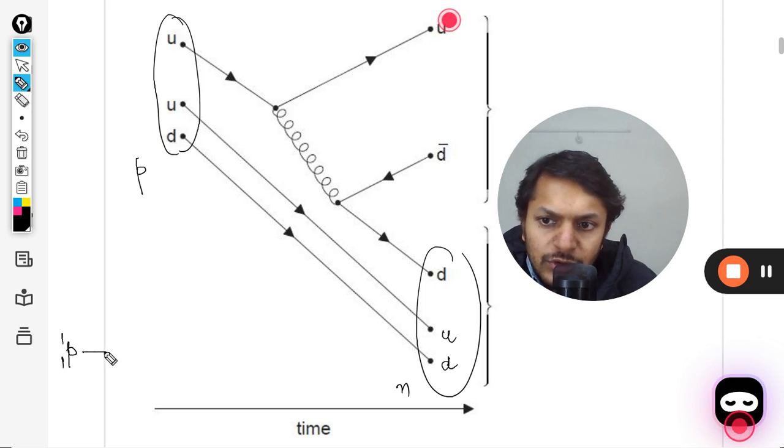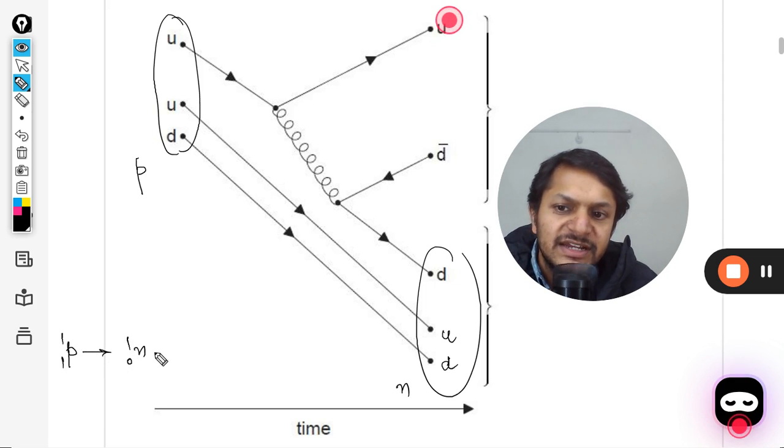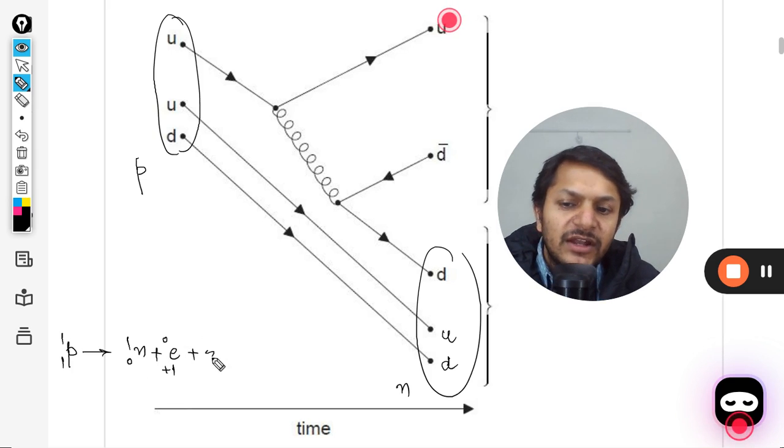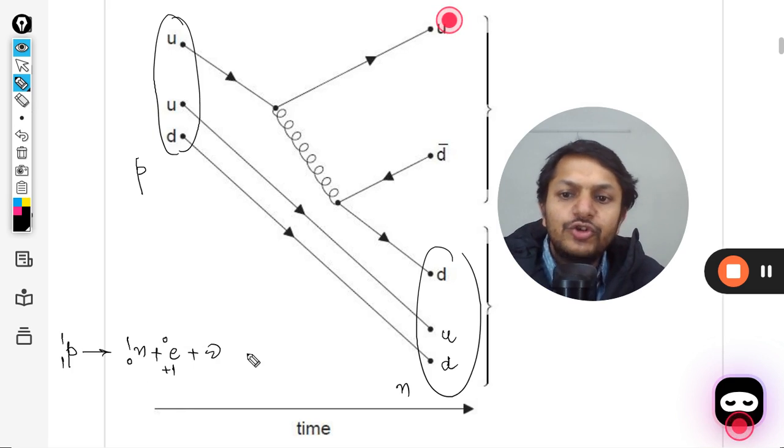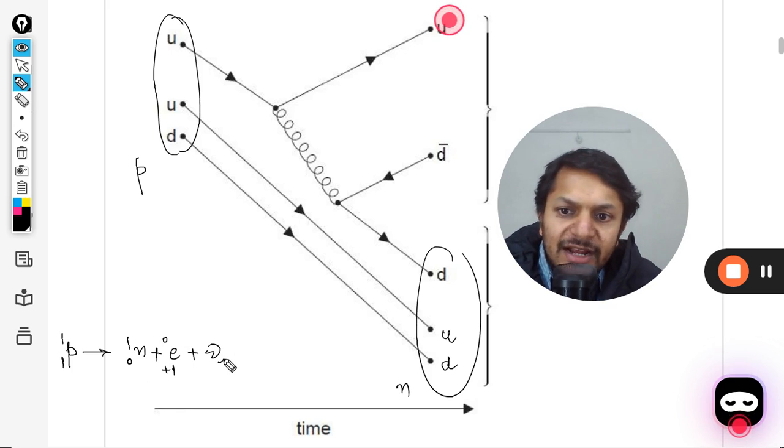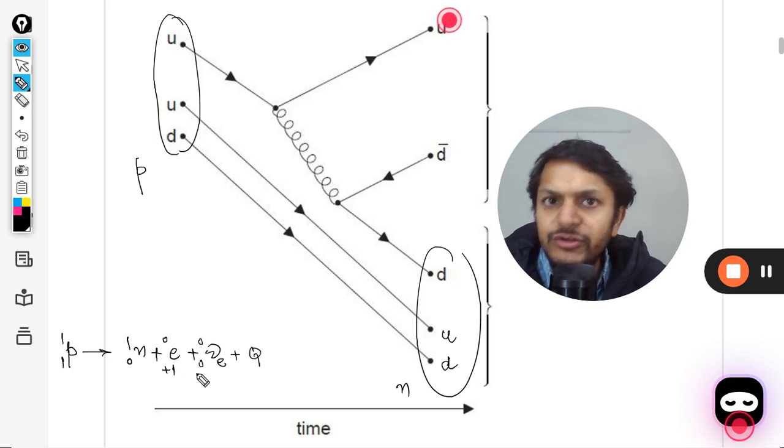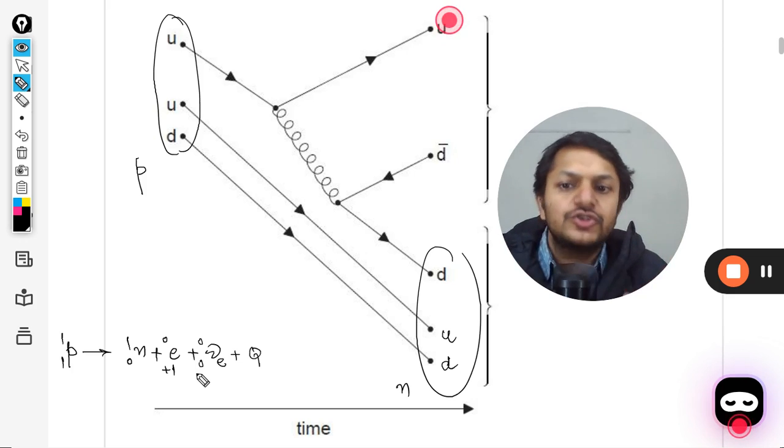At that time also I have given you this formula. So the proton is now converting into neutron. The mass number is one, charge number is zero, and so a positron is created, a beta plus. This we have done in radioactivity. A neutrino is produced, electron neutrino, plus the heat is produced. The mass number for the neutrino is zero as well as the charge number for the neutrino is zero.